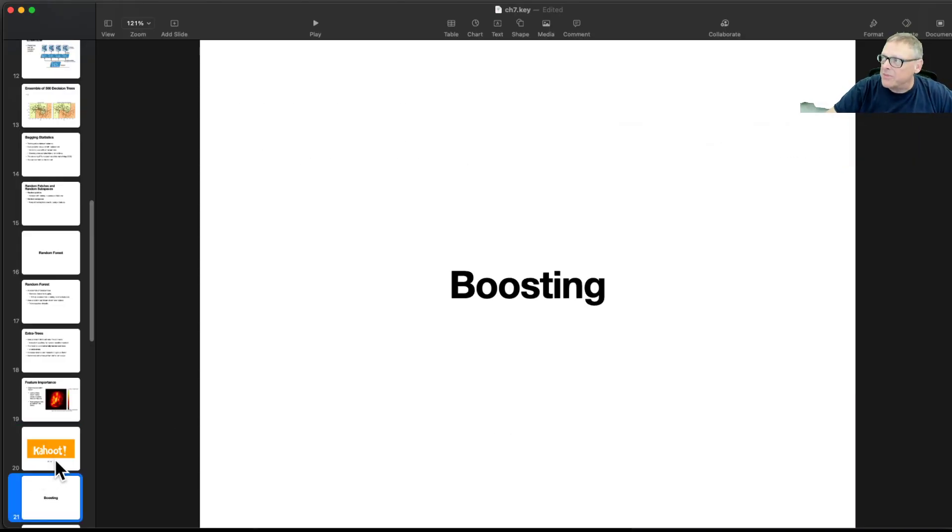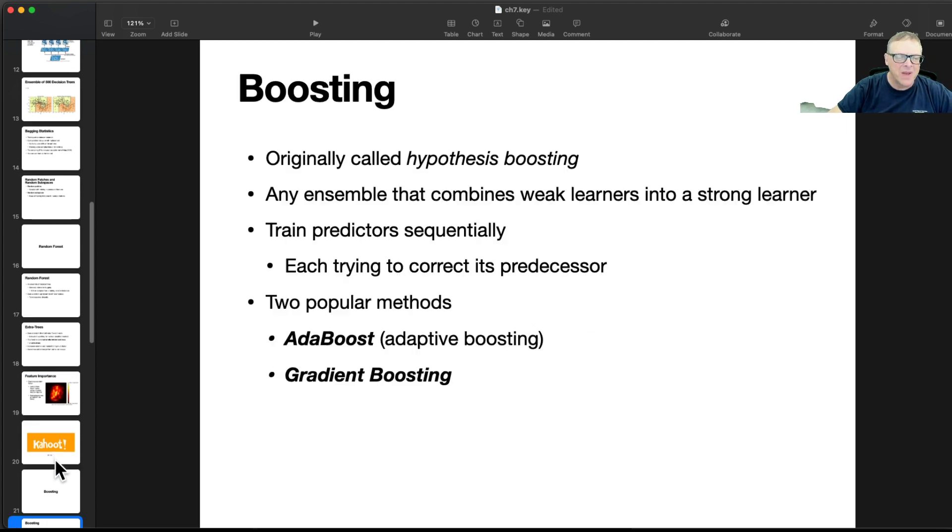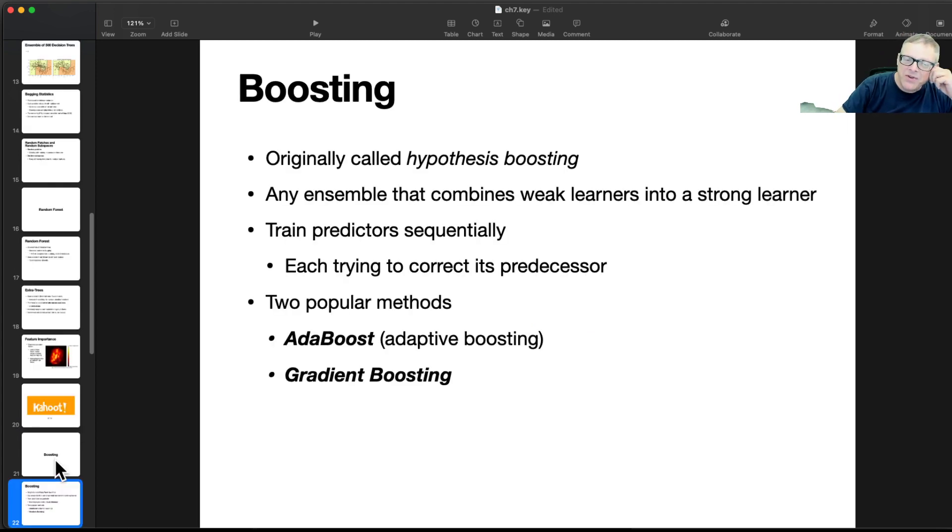All right, so boosting. So this is hypothesis boosting, and this is any ensemble that combines weak learners into a strong learner, and that's the point. All right, now, what you do here is you train the predictor sequentially. So you train it on one model, and then you take the errors of that model and train another AI after it to patch the errors on the first model. So the two techniques are adaptive boosting and gradient boosting.